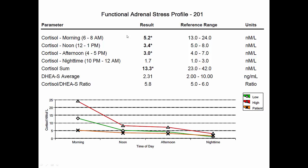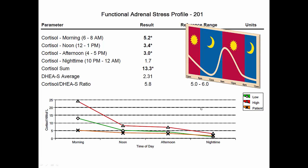Here's a stage three patient. Cortisol in the morning is flat, at noon it's flat, in the afternoon it's relatively flat, and at nighttime it's finally normal. So it's basically a flat line — we don't have that nice taper. This is another big sign of HPA axis dysfunction. On the labs, that looks like low, low, low, and low across all time points.